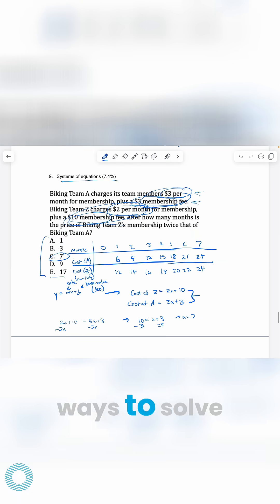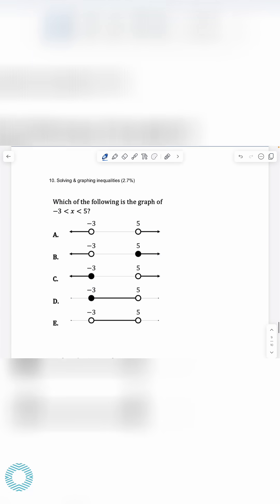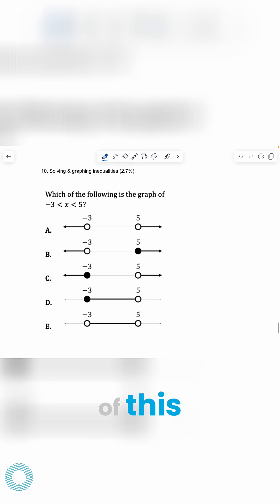Okay, I showed you two ways to solve systems of equations. Alright, solving and graphing inequalities. Which of the following is the graph of this? So, graphing inequalities like this, if you're given it in this form, I recommend you break it out into two inequalities.